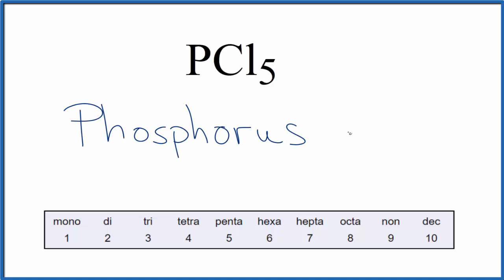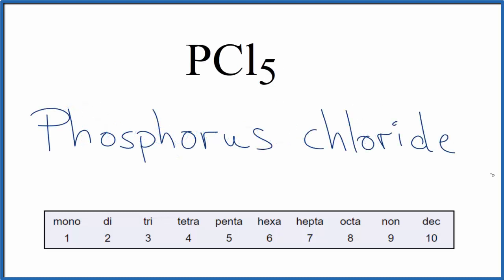And then for chlorine, we're going to write chloride. And now we'll use our prefixes. If we only have one of the first element here, we don't write anything, we just have the same name as the periodic table.